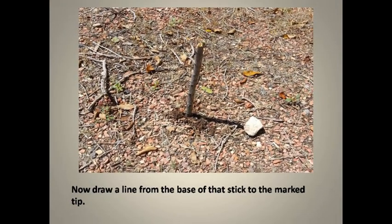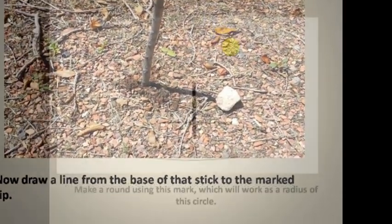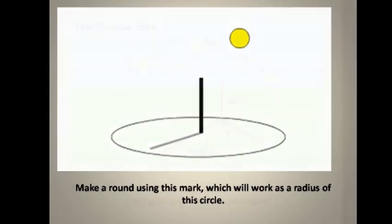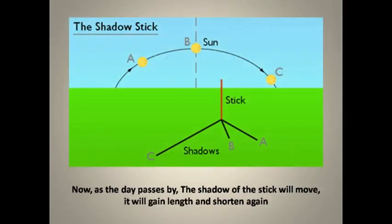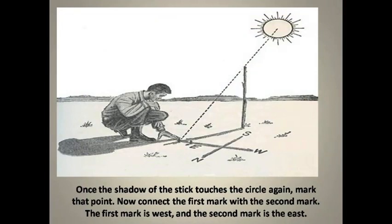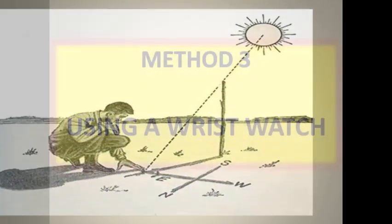Now draw a line from the base of that stick to the marked tip. Make a circle using this mark, which will work as a radius of the circle. Now as the day passes by, the shadow of the stick will move — it will gain length and shorten again. Once the shadow of the stick reaches the circle again, mark that point. Now connect the first mark with the second mark. The first mark is west and the second mark is east.